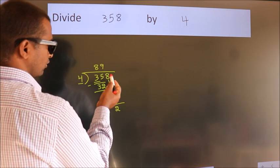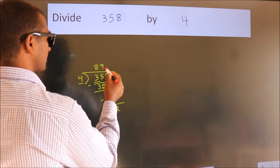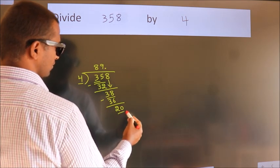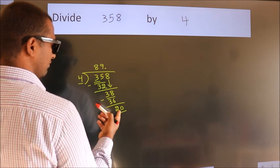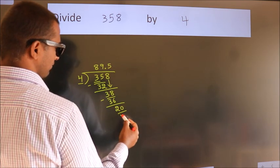After this, no more numbers to bring down. So what we do is we put a dot and take 0. So 20. When do we get 20 in the 4 table? 4 fives, 20.